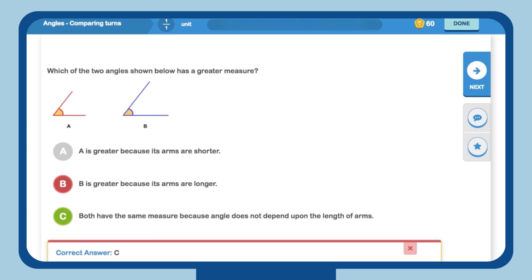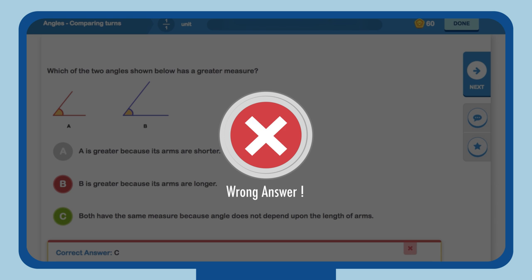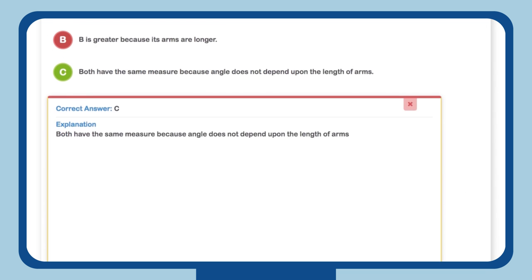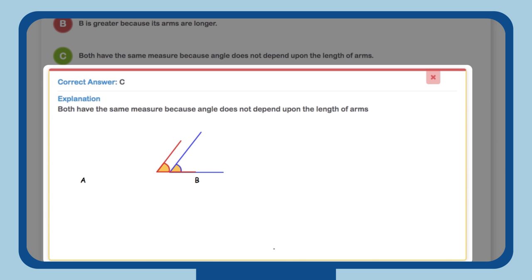Aarti chooses B as the arms are longer. This is incorrect too. MindSpark explains to her that angle A and angle B make the same angle.